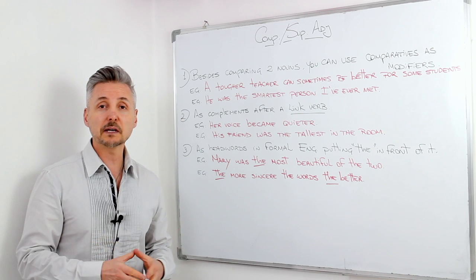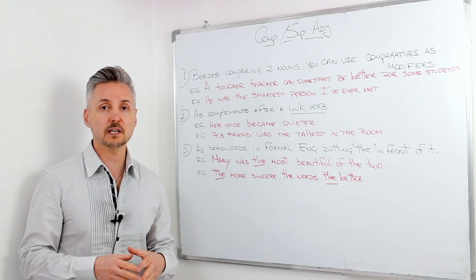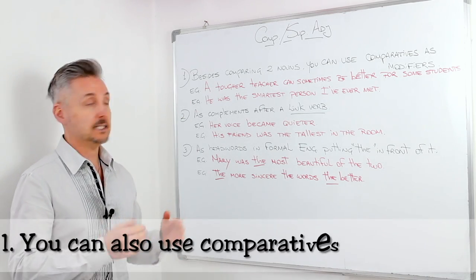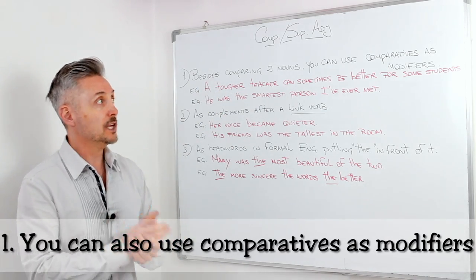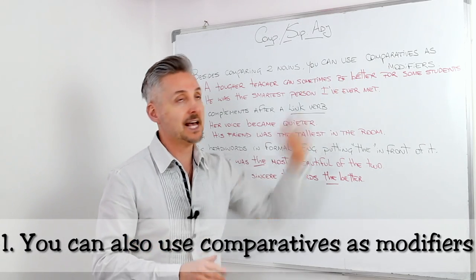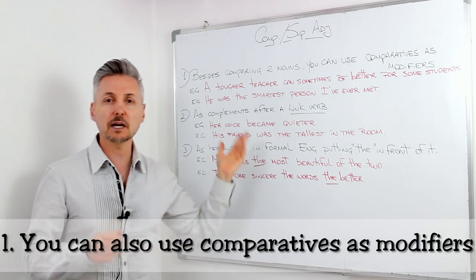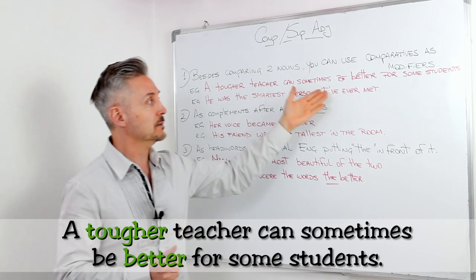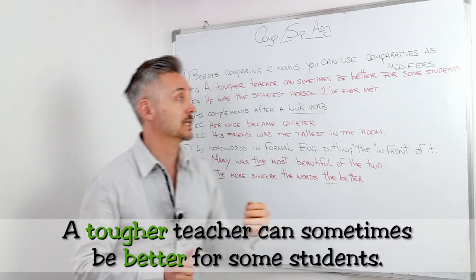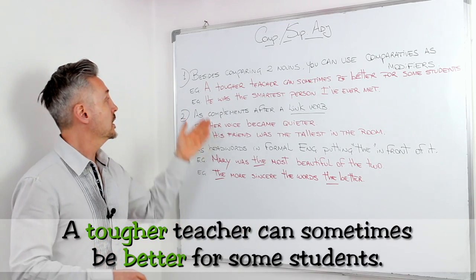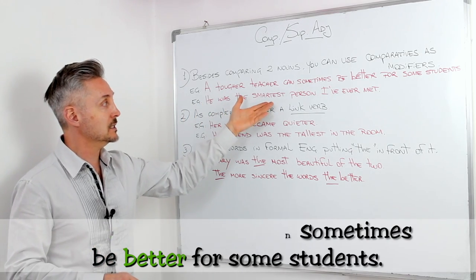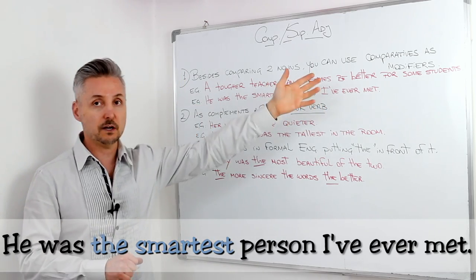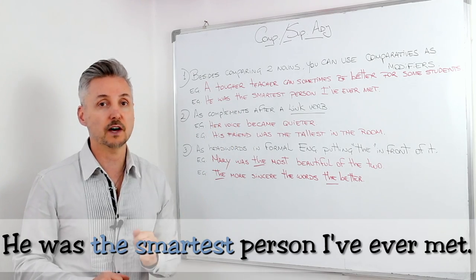A few things I want to mention about comparative and superlative adjectives. The first one is that besides comparing two nouns, you can use comparatives as modifiers. Just like my two examples here. A tougher teacher can sometimes be better for some students. Or, he was the smartest person I've ever met. So, modifiers. You can use them as modifiers.